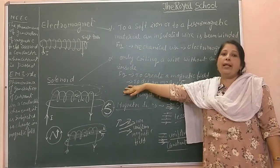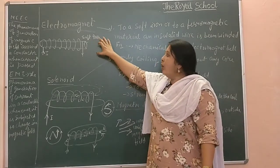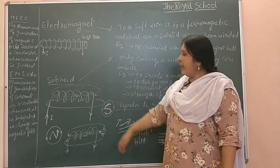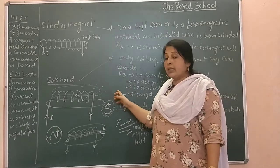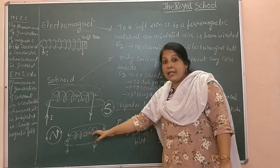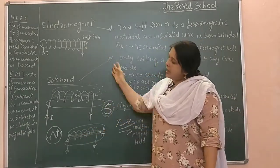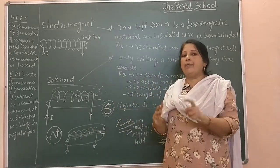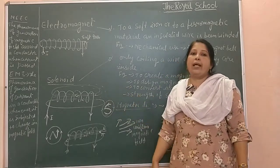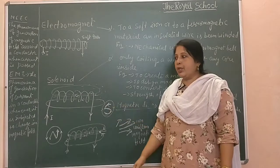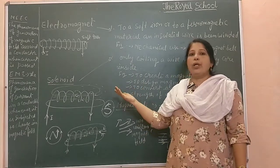By this we have understood the difference between an electromagnet and a solenoid. In an electromagnet, a soft iron core is placed inside and it is used in motor applications. In a solenoid, no soft iron is placed inside — current is passed and a magnetic field is created, and this is used in generator applications. These are based on two different phenomena, and next we are going to study the most important topic: the motor.